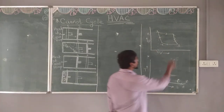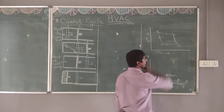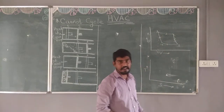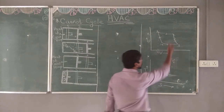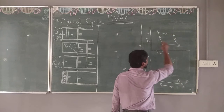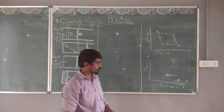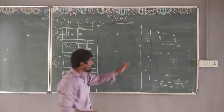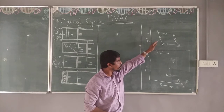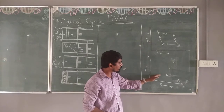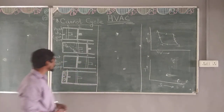So, processes 1 to 2 and 3 to 4 are reversible isothermal processes, and processes 2 to 3 and 4 to 1 are reversible adiabatic processes. Now let us try to construct this PV graph on the TS (temperature-entropy) curve.